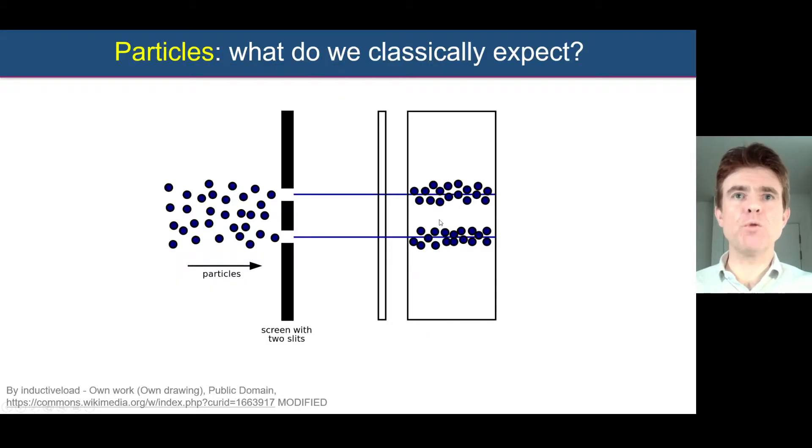What about particles? If we were to have a wall and fire particles at it from the left-hand side here, then classically, what we expect for particles of a given size is that we'd end up with two clusters of particles corresponding to the two gaps in this wall here. That's exactly what we would see with reasonably sized particles.